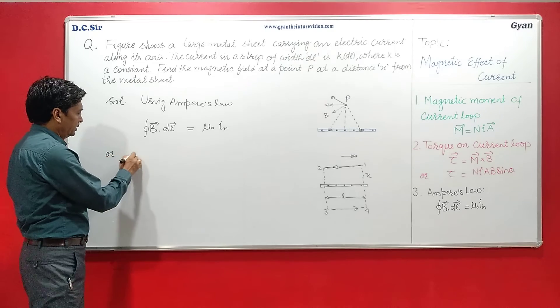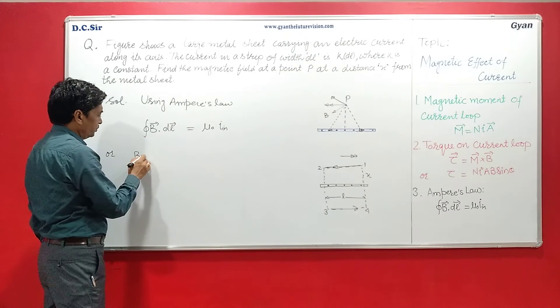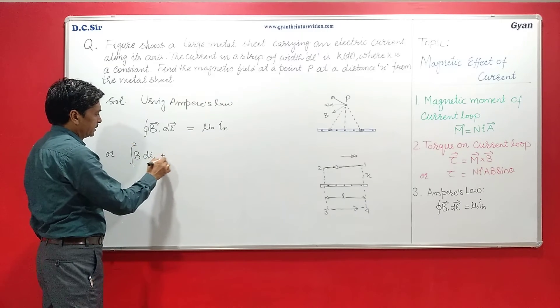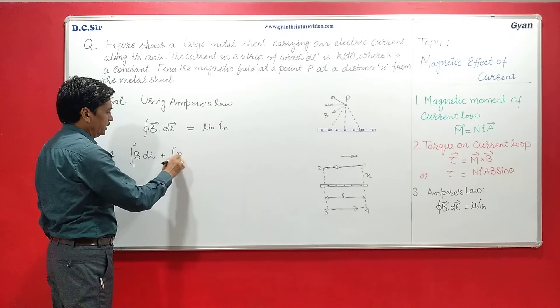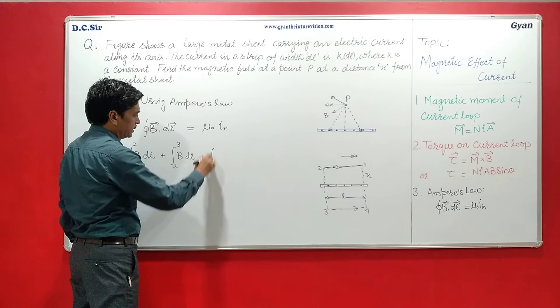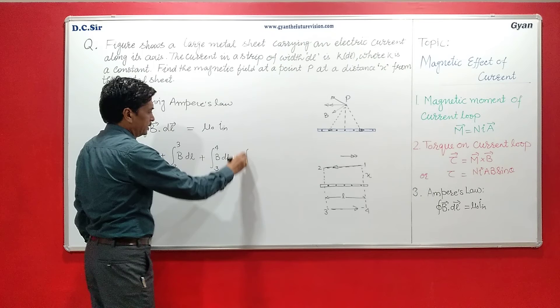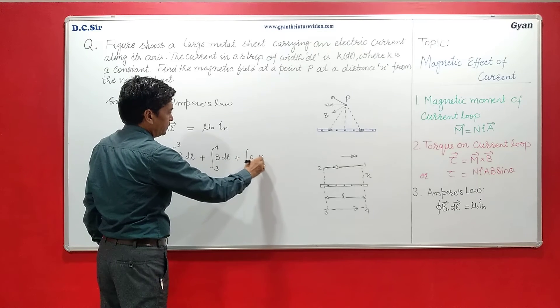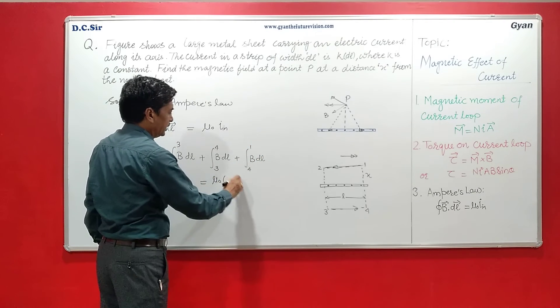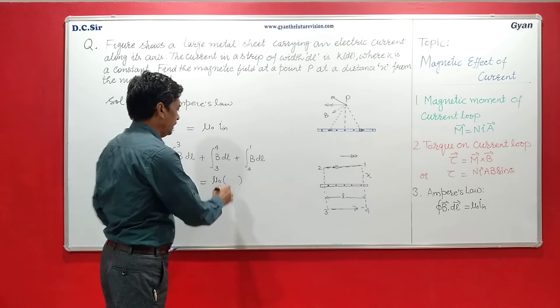So we can write here ∫ B·dL from 1 to 2, plus ∫ B·dL from 2 to 3, plus ∫ B·dL from 3 to 4, plus ∫ B·dL from 4 to 1, this is equal to μ₀ and current inside this loop that is K·L.